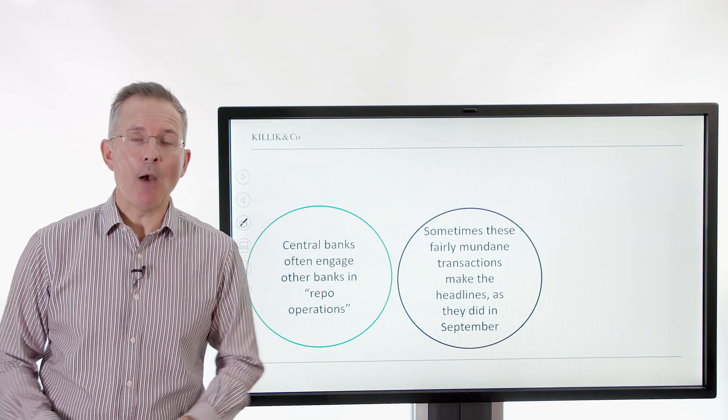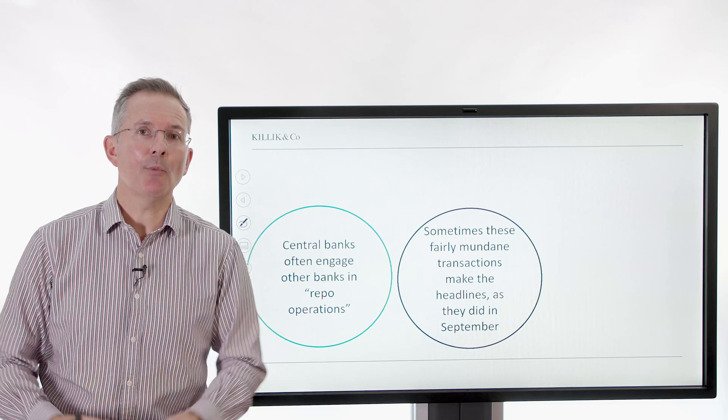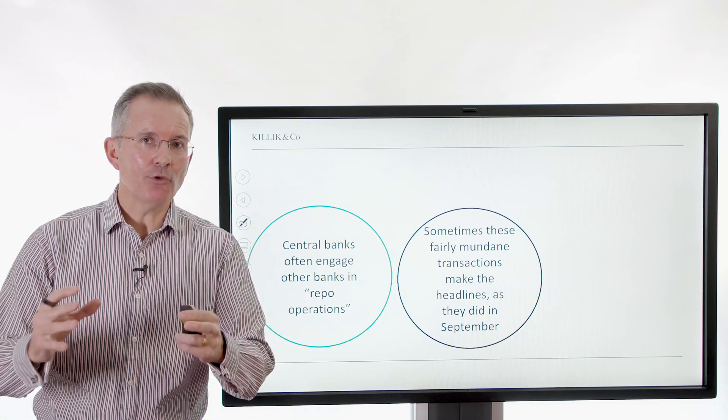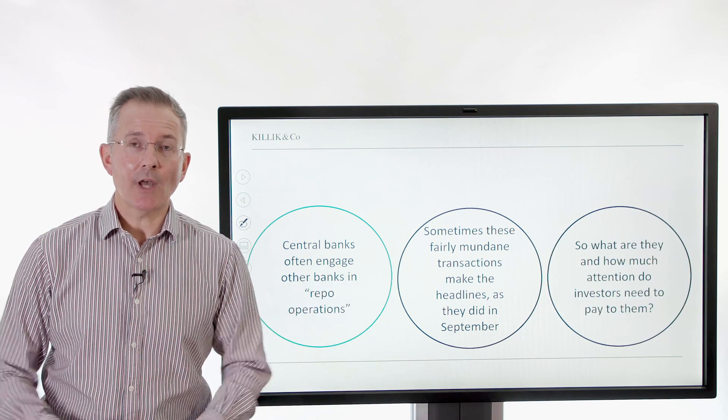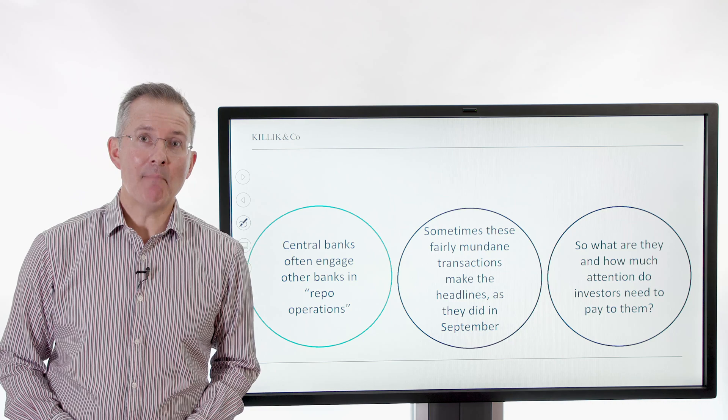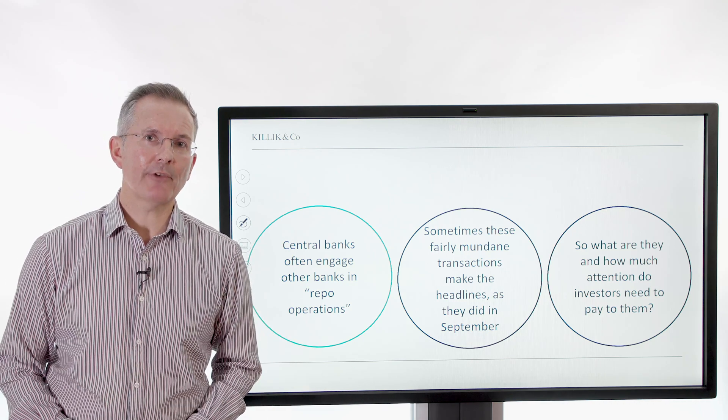In September, there was a huge short-term spike in what's called the repo rate. And that drew a lot of headlines. So the question is, what are these things? And does something like that matter more widely than just in the repo market itself?